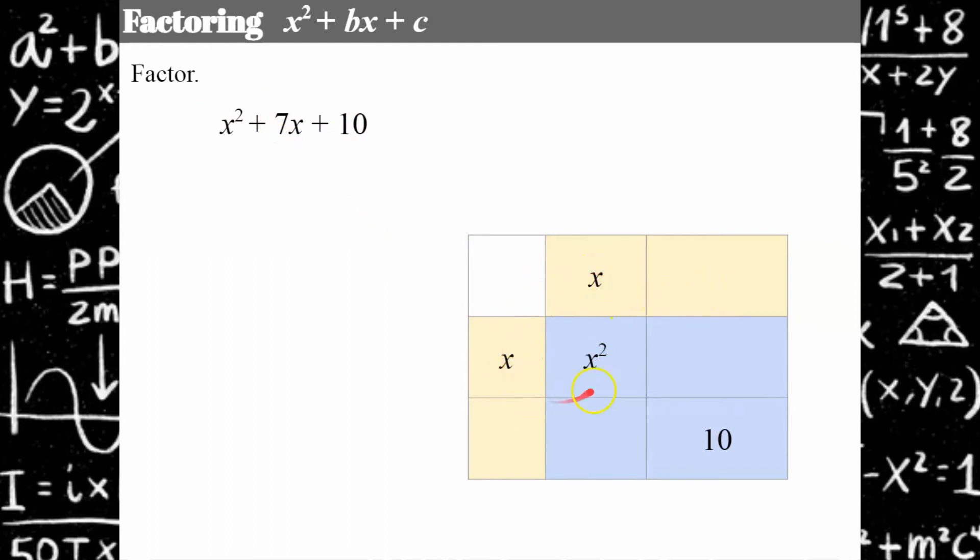I already know that this cell of my table would be x times x or x squared. Then I know this c term is always right here. So instead of before, we're working in reverse. Before you used to have these yellow cells filled and now all we know is this 10. We need to know what factors of 10 when multiplied will give us 10 but when added are going to give us 7.